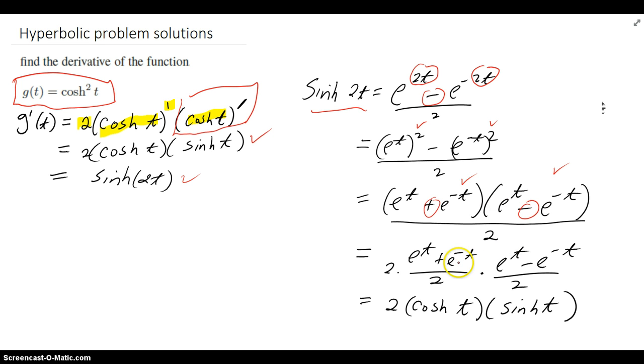Then, if I want it to end up looking like with the 2 out there, I multiply top and bottom by 2, so that I can have a 2 under each of these e expressions. So it would cancel out and get you back to the previous step. And then, you see that it's 2 cosh t sinh t.